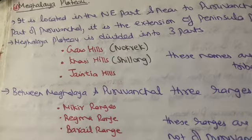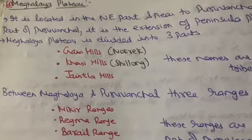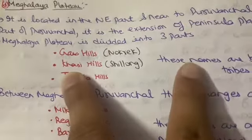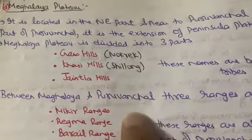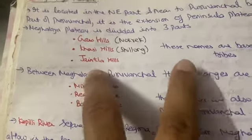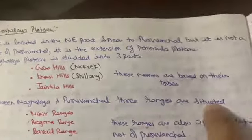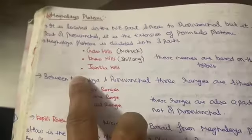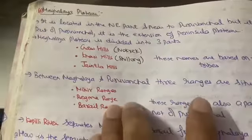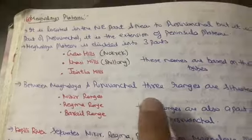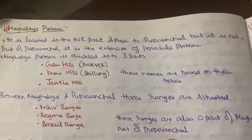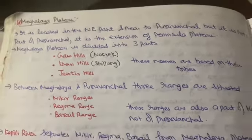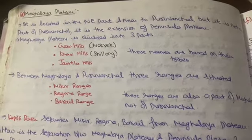As you can see on the map, between Meghalaya and Puruvanchal there is a space, and in that space there are some ranges. Their names are: Maikar Range, Regma Range, and Barrel Range. These ranges lie between Meghalaya and Puruvanchal, but they are considered a part of the Meghalaya Plateau — not Puruvanchal. This is an important point.